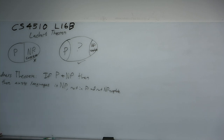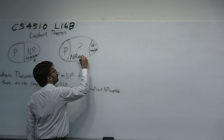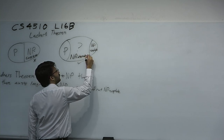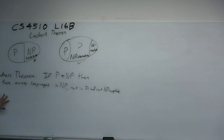Now, two things. First off, we could not show an NP-intermediate problem exists — and this class is called NP-intermediate. It's not the hardest problems in NP; that's NP-complete. NP-intermediate is this grey zone in the middle. We could not show that problems exist in NP-intermediate unconditionally. Because if we could show a problem was NP-intermediate, it would be in NP but not in P — so we could separate P from NP that way.